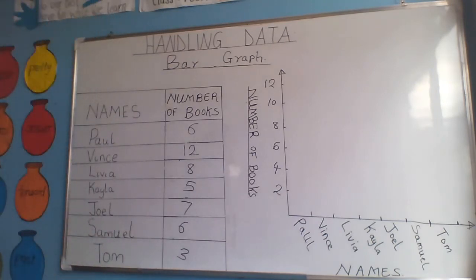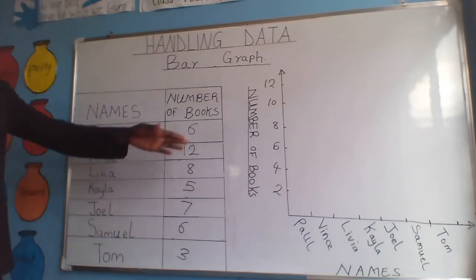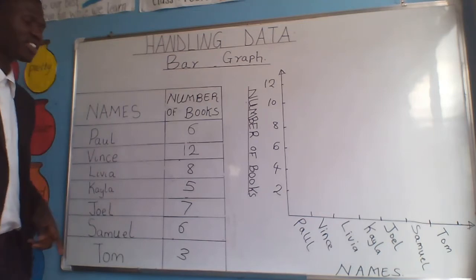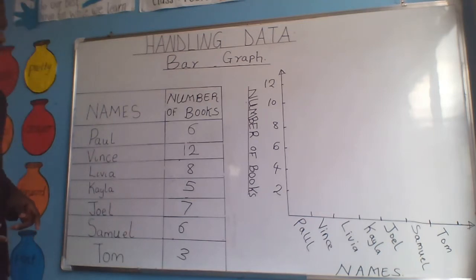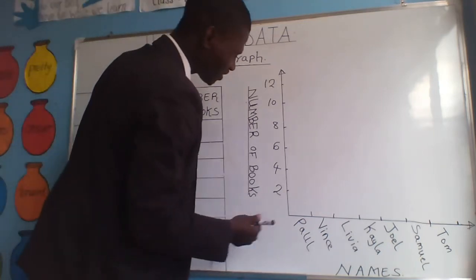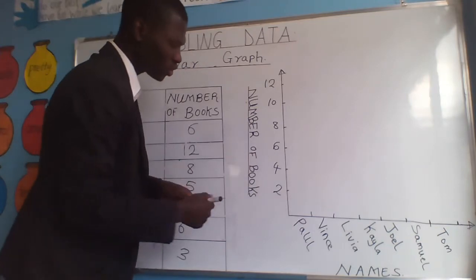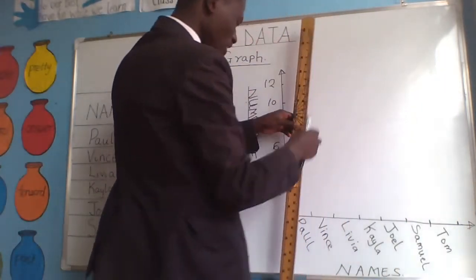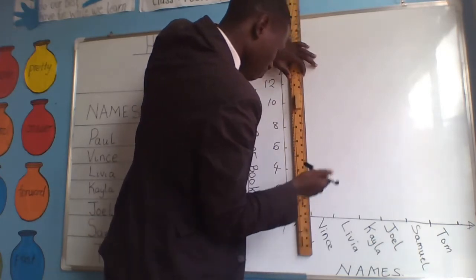Now let us start to represent this information in our graph. Paul has 6 books. Where is 6? 6 is here, so Paul is here. The bar starts below the line and we will draw it up to 6.